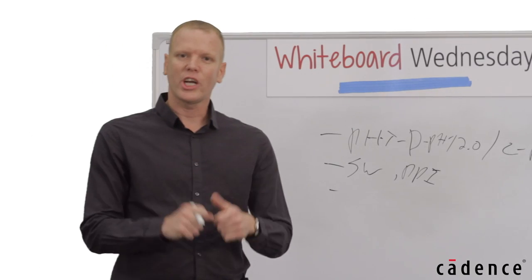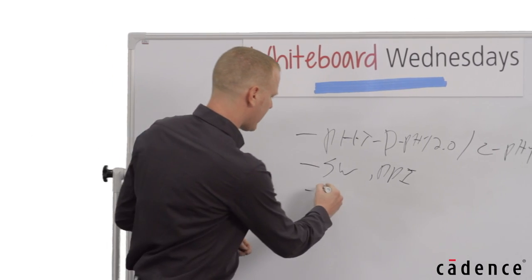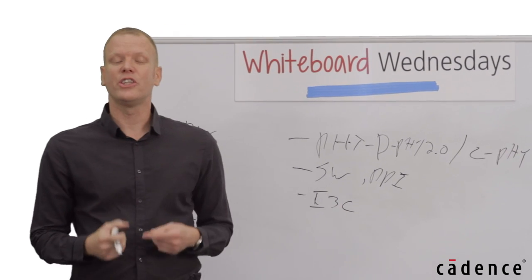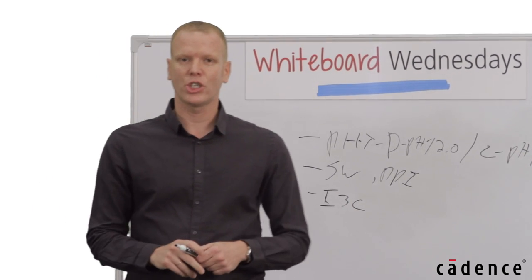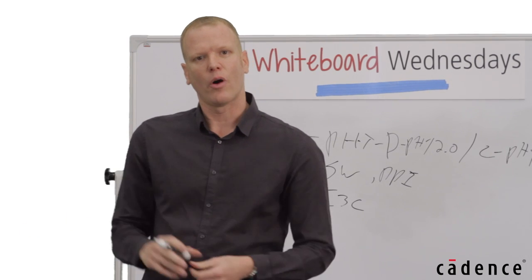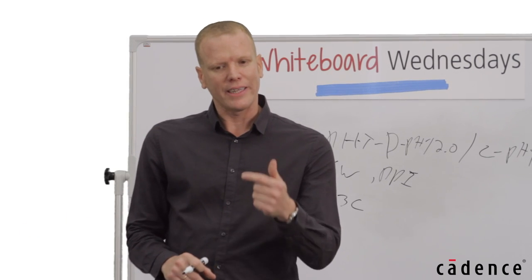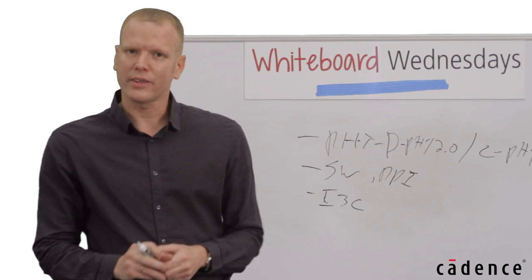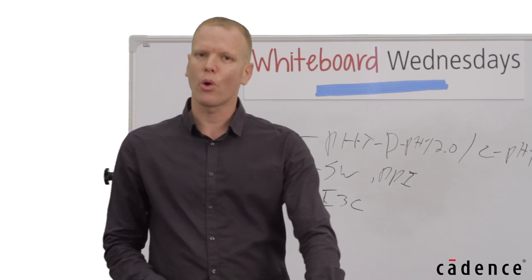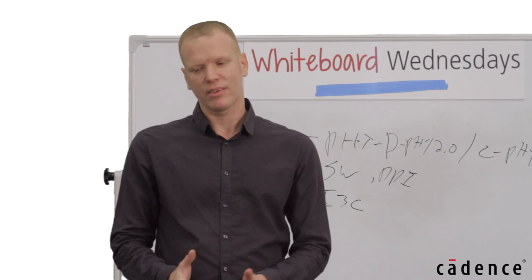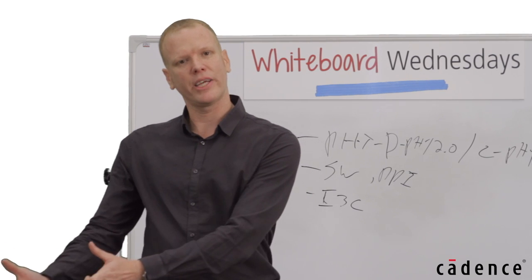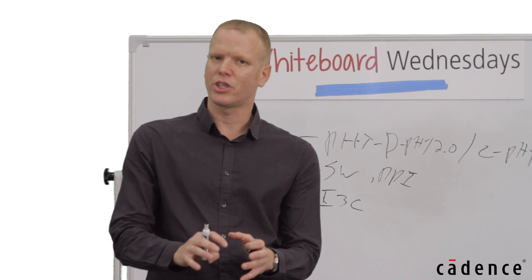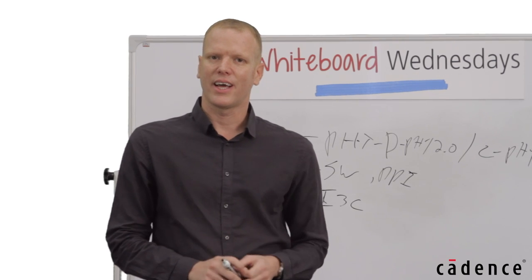Another change in the CSI-2 2.0 spec is the I3C — a new specification for the control side of the camera sensor — which enables sending traffic over the control interface, resulting in much lower power consumption, but enables enough data to be transmitted for IoT and machine vision device requirements.